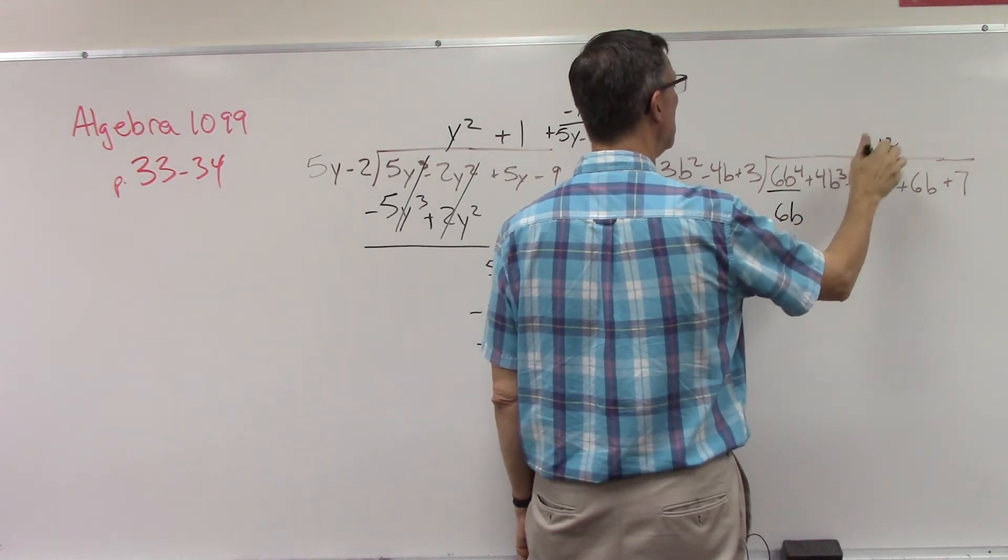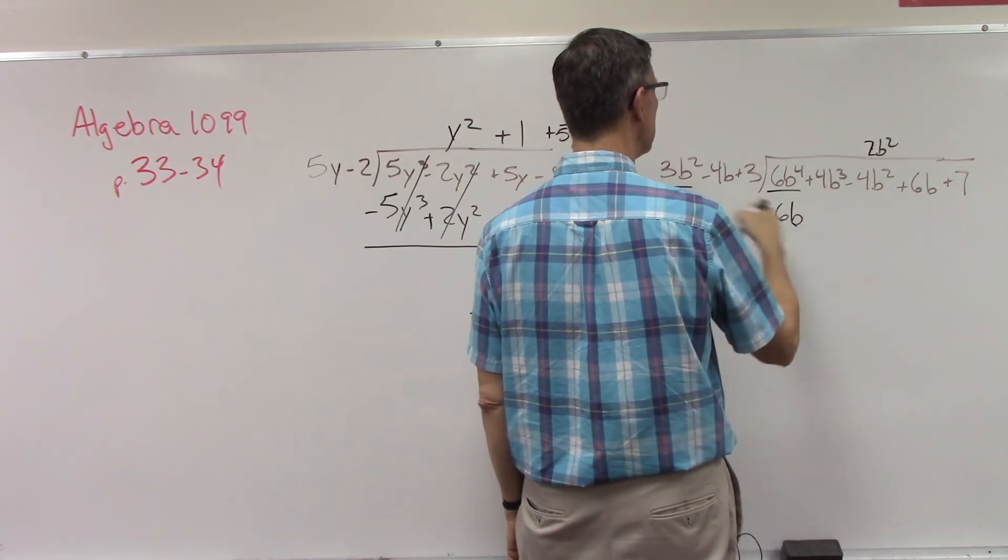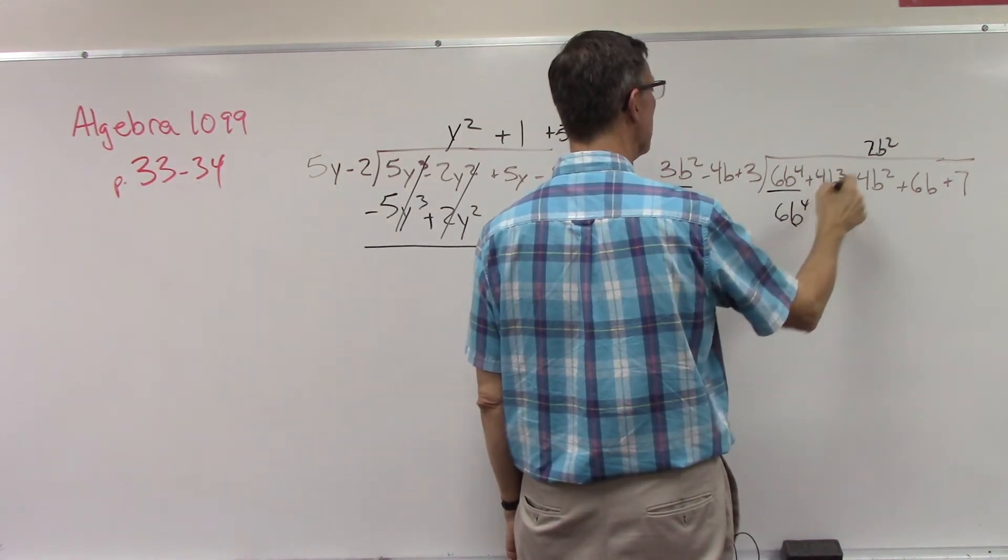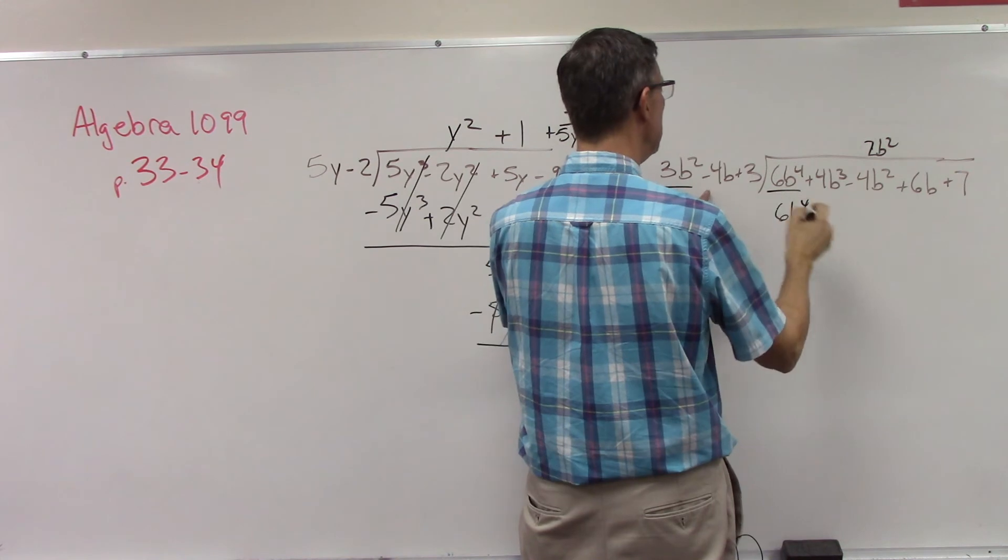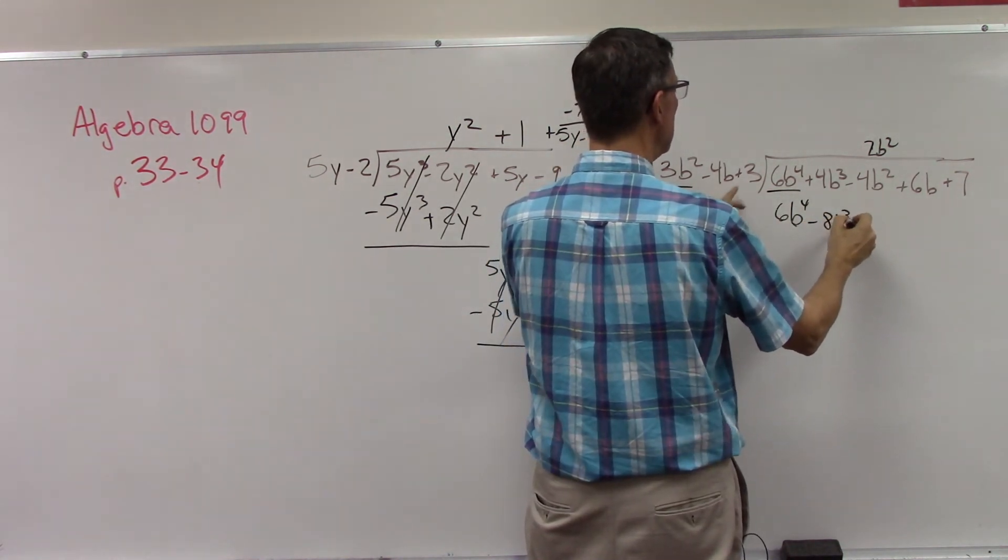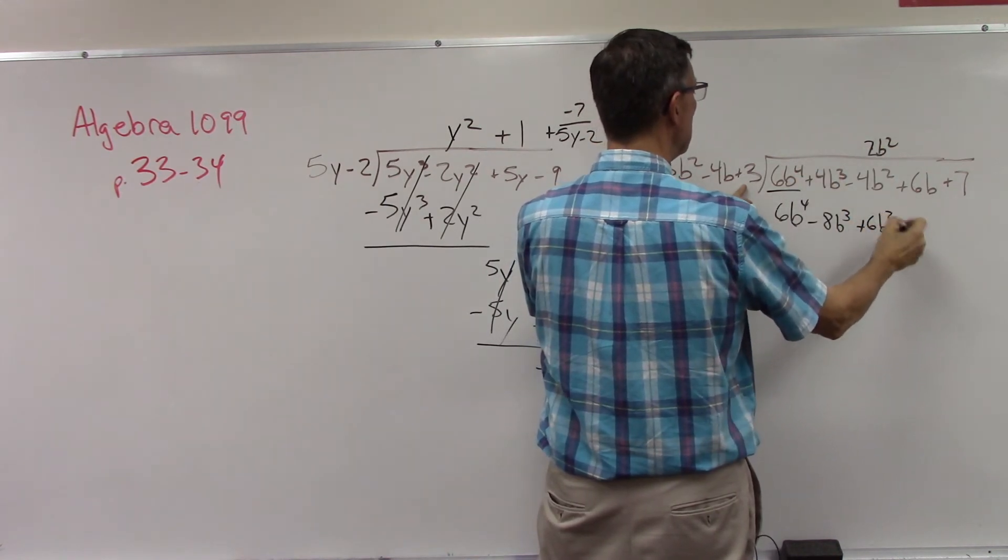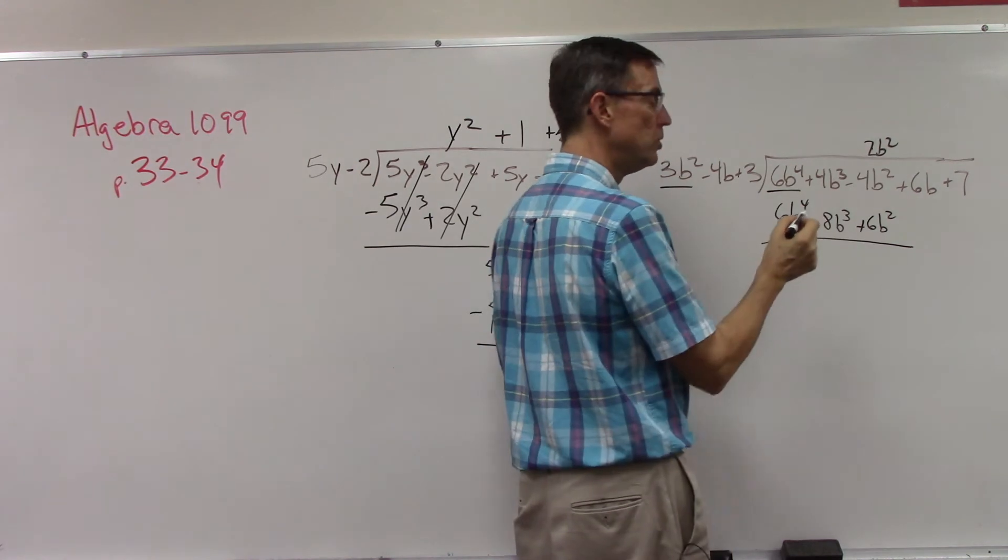2 times 3 is 6, b to the fourth. Now this times the middle term, negative 8b to the third. And then this times this would be plus 6b squared. Change them to their opposites and add.